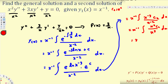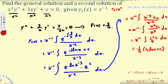This gives us x⁻¹ multiplied by the integral of c₂/x dx. Integrating 1/x gives ln(x), so we get x⁻¹ · (c₂ ln(x) + c₁). Multiplying everything by 1/x, the general solution for this differential equation becomes: y(x) = c₂ ln(x)/x + c₁/x.